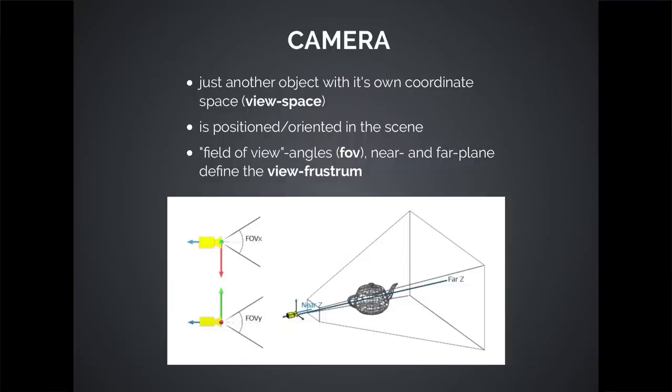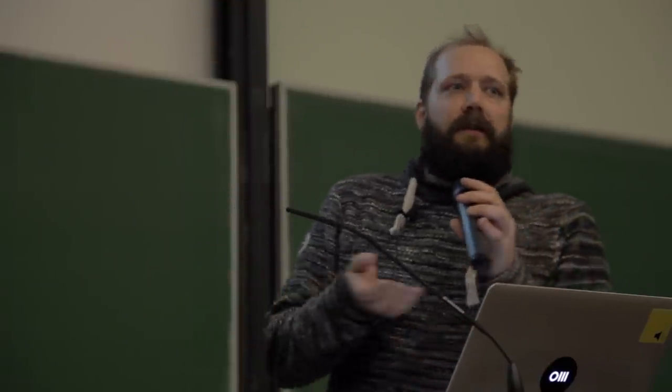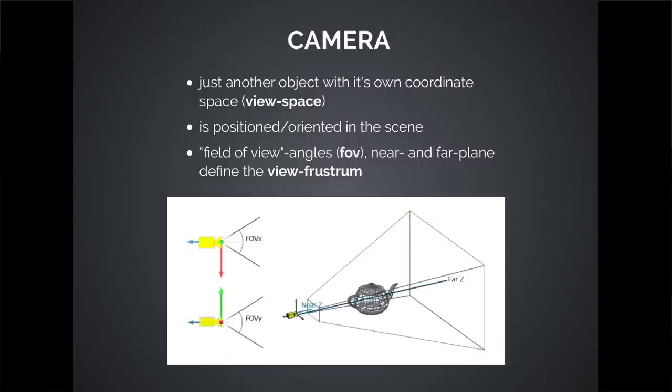The camera is special in that it does the actual viewing and filming of the scene. It can be positioned and rotated like everything else, but it has a field of view — which you might know from real cameras — basically two angles, horizontal and vertical, that open up what's called the camera view frustum. In addition, there's a near plane and a far plane, which define this cut-off pyramid called the frustum.